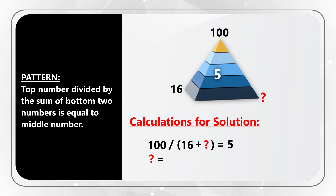Looking at the second pyramid: 36 divided by (6 plus 3) equals 36 divided by 9, which equals 4. For the third pyramid with the missing number: 100 divided by (16 plus ?) equals 5. To find the missing number, divide 100 by 5 and subtract 16: 20 minus 16 equals 4. Verification: 100 divided by (16 plus 4) equals 100 divided by 20, which equals 5 — matching the middle number.